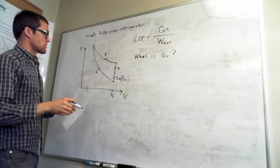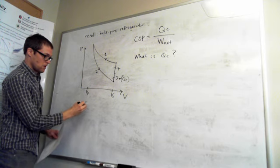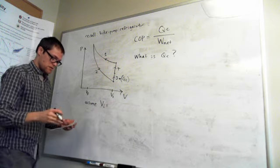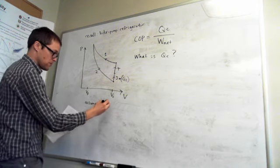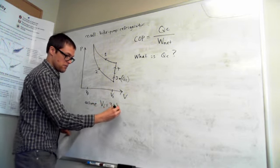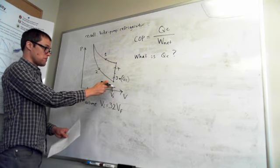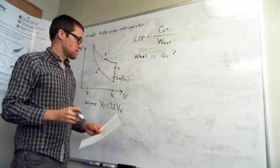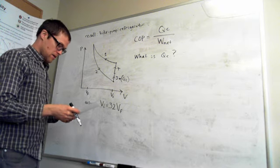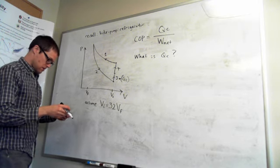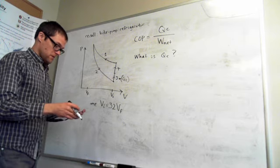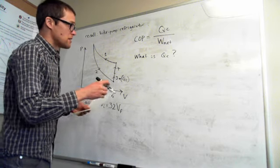To make this more specific, let's assume that the initial volume is 32 times bigger than the final volume, so the compression in step 1 reduces the volume of the gas by a factor of 32. That gives us the specific number we need for this example.